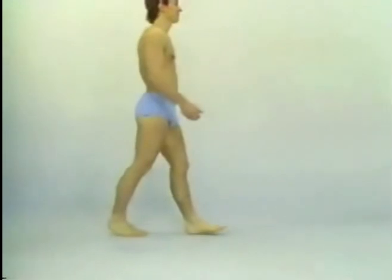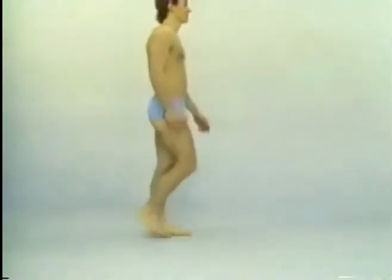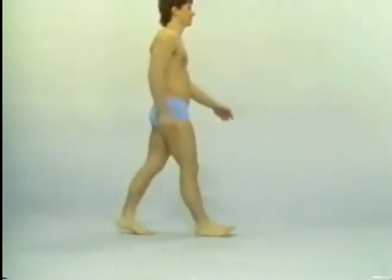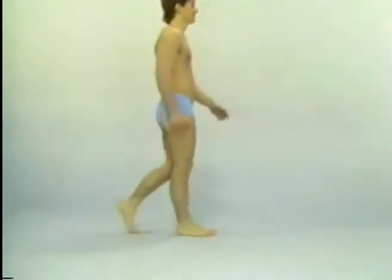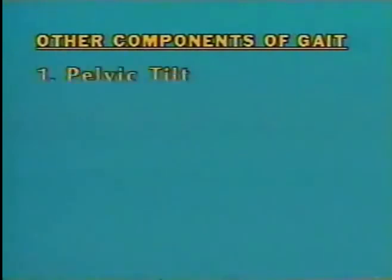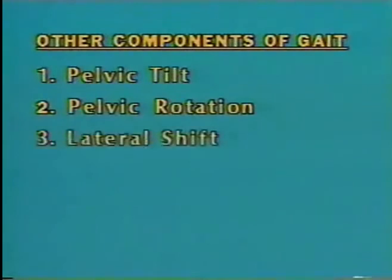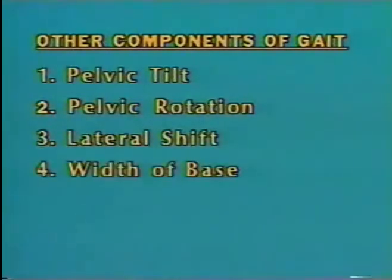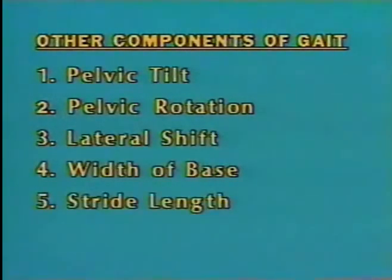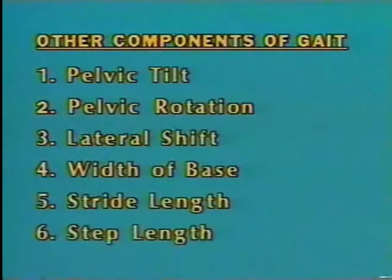As well as the various components previously discussed, there are several other components of gait which the examiner must observe: pelvic tilt, pelvic rotation, lateral shift, width of base, stride length, and step length.